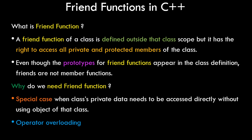Point one: a friend function of a class is defined outside that class's scope but has the right to access all private and protected members of the class. So there might be a scenario where an outside function needs to access data of the class directly without using objects or member functions. Point two: even though the prototypes for friend functions appear in the class definition, friend functions are not member functions.